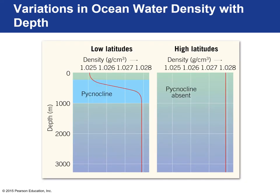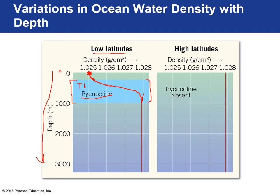Looking at the graph — depth going from surface down to about three kilometers — at low latitudes we have very low density water at the surface, and as you go deeper the density increases gradually then drastically in the pycnocline region. The pycnocline and thermocline are essentially the same layer because temperature is dropping, and because temperature drops, density increases. It levels off past one kilometer. At high latitudes, you have high density water at the surface and density doesn't change with depth because temperature remains constant.